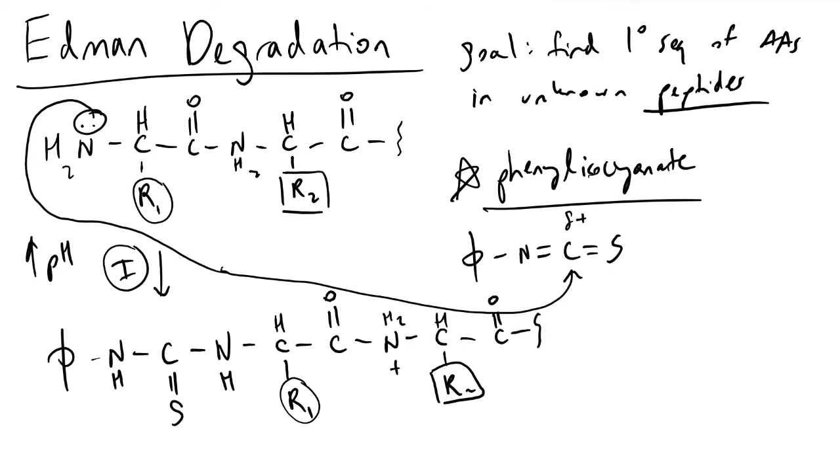This symbol here, squiggly lines, is a common thing you'll find in textbooks to denote the rest of the polypeptide, so we don't have to be here for the next 12 hours writing this down.